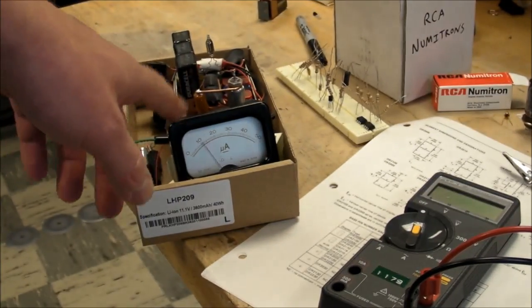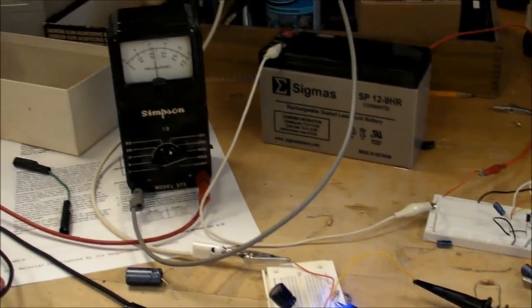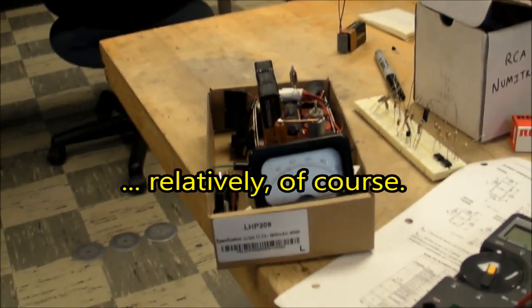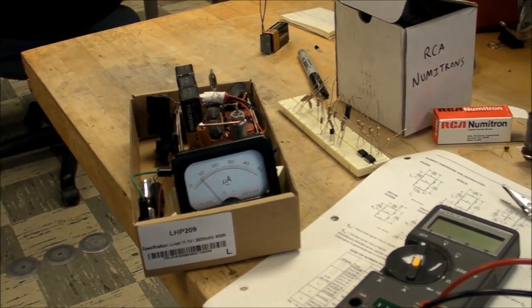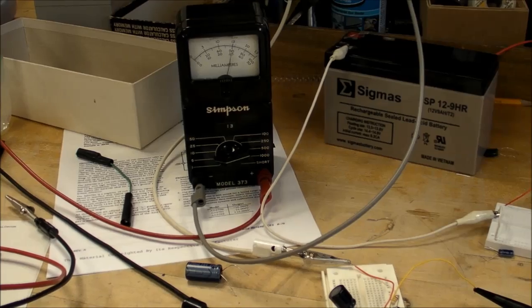And I got the microamp meter in series with the battery just showing how the current changes. You can see that thing operates on high voltage and low current, whereas this thing operates on low voltage and high current. The neon lamp oscillator is in the microamp range, whereas this one...